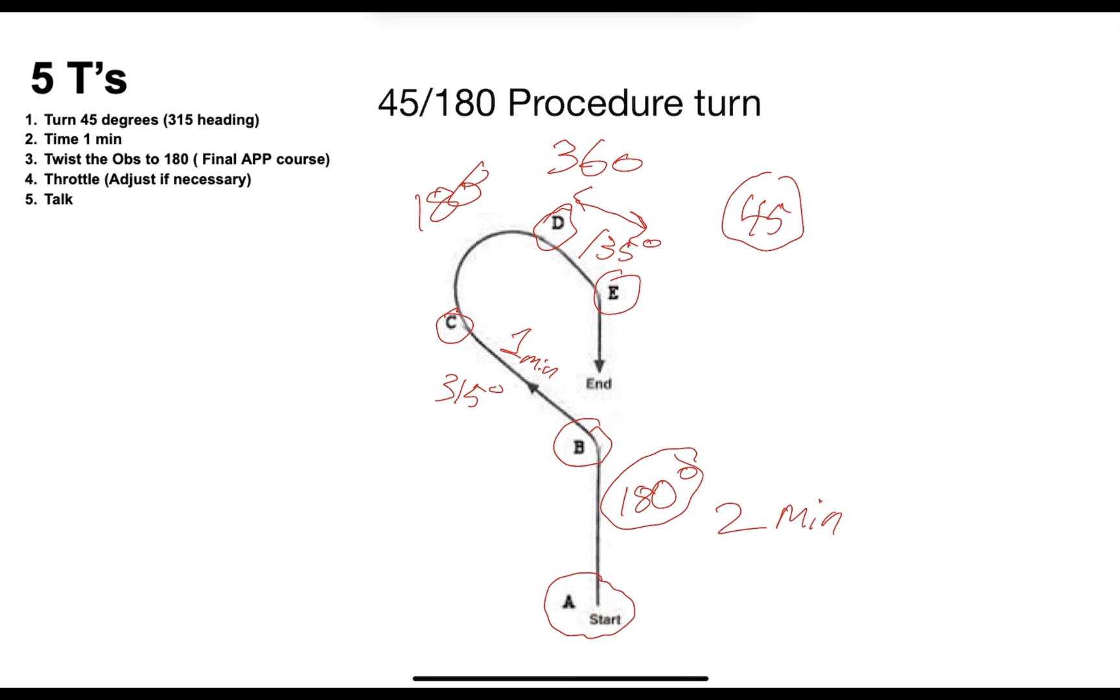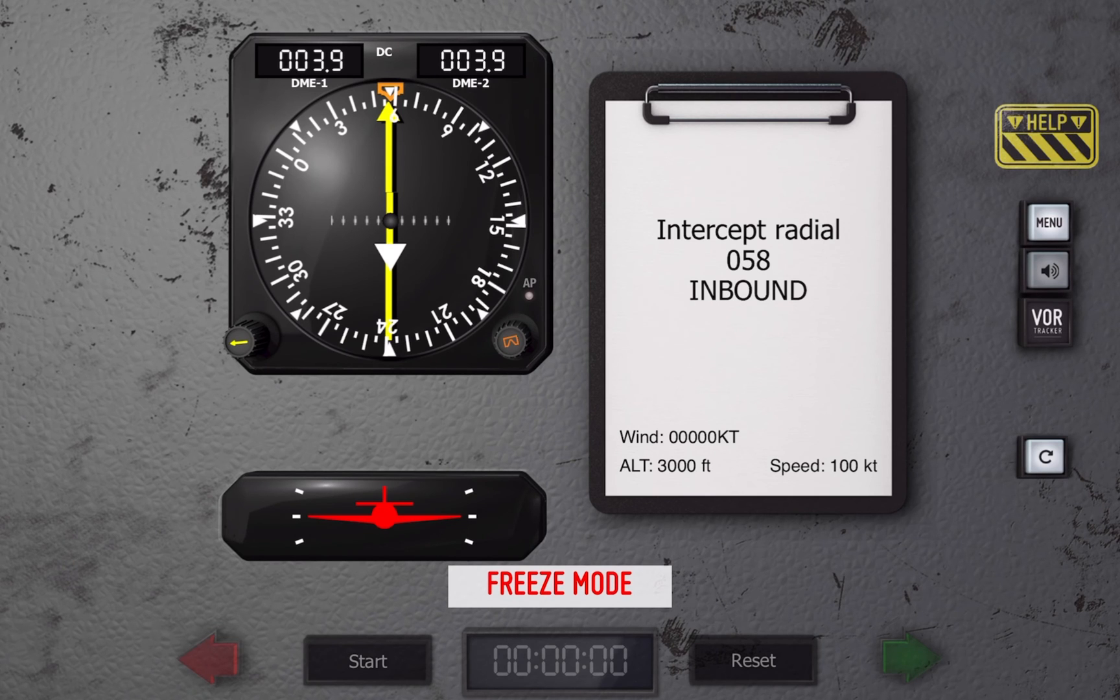Alright guys, we will be doing the exact same thing, only this time it will be done with this really cool simulator you can find on the Apple store. It's completely free and a good training device. Anyways, so we are currently intercepted on the 058 radial from the station. We will be applying our procedure turn, the one that we just saw earlier, at the 5 DME.